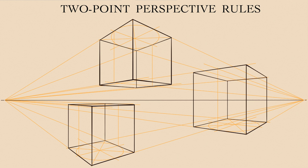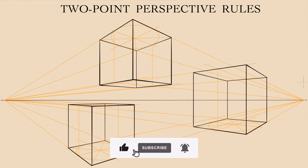Objects that are closer will appear bigger than those further away. Remote objects will appear closer to the horizon. Foreground objects will overlap distant objects along the line of sight. Circles in perspective will appear as perfectly elliptical ovals, and the long axis of a horizontal oval will be strictly horizontal. There are many other rules applicable when drawing various objects.